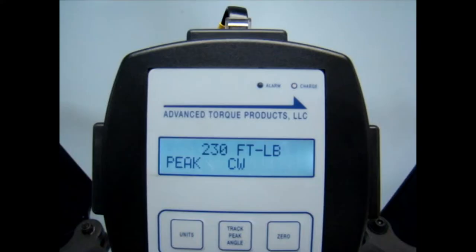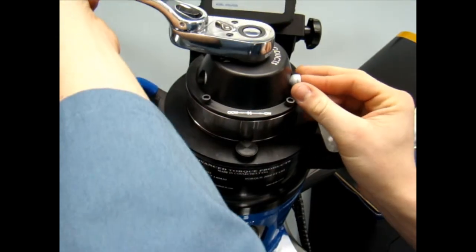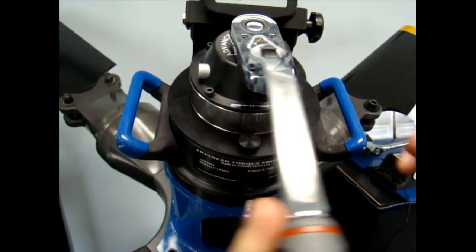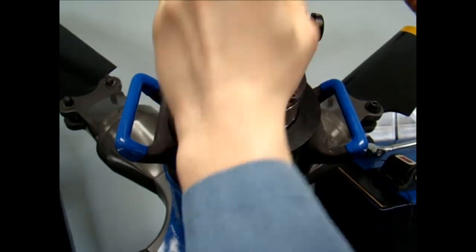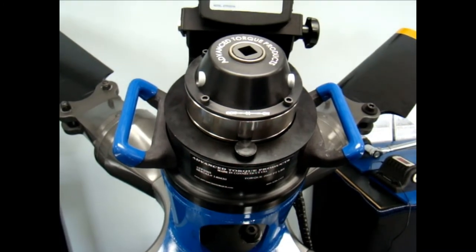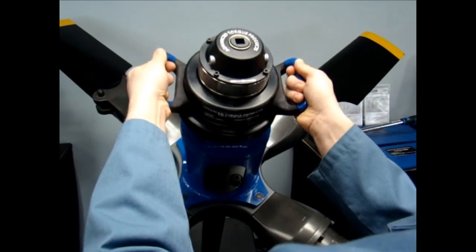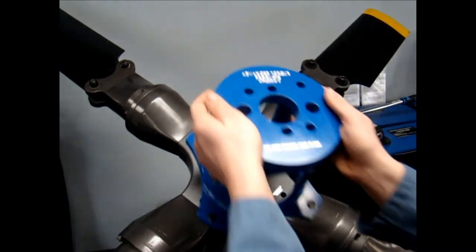Once target torque is achieved, you'll want to remove the multiplier from the application. To do this, apply a small amount of pressure in the direction you were torquing. This will allow you to disengage your pawl and put it in the neutral position. Carefully release the force from the multiplier. Now you'll be able to remove the multiplier and its fixturing from the application.